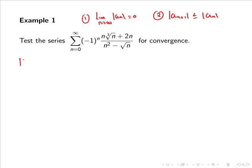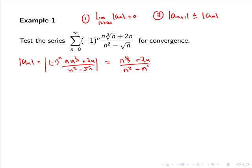So first of all, |a_n| equals the absolute value of (-1)^n times (n·n^(1/3) + 2n) over (n² - √n). Since |(-1)^n| = 1, we get (n^(4/3) + 2n) all over (n² - n^(1/2)).